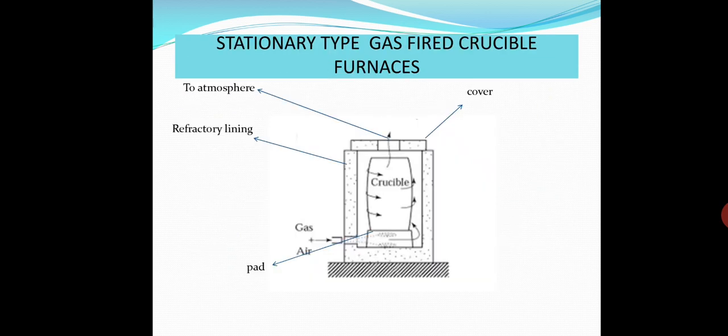This is the diagram of stationary type gas fired crucible furnace. As described, gas and air mixture entered into the furnace chamber, which is burnt, and the flame encircles the crucible. The crucible contains the metal to be melted, and due to this heat, metal melts.